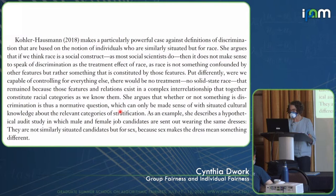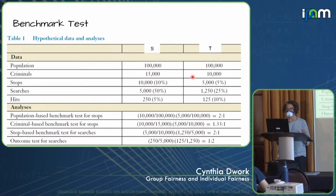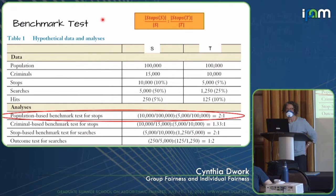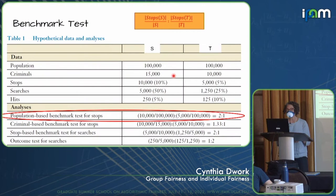Here's some hypothetical data. You have two groups — in the paper it's black and white, but I'll call it S and T. The two groups are the same size but have different numbers of criminals. There are numbers for police stops, searches, and so on. This is the so-called population-based benchmark test for stops. In the denominator is the size of the population — the number of people in S versus T. Since S and T both have 100,000 people, we get 10,000 stops versus 5,000 stops, a two-to-one ratio.